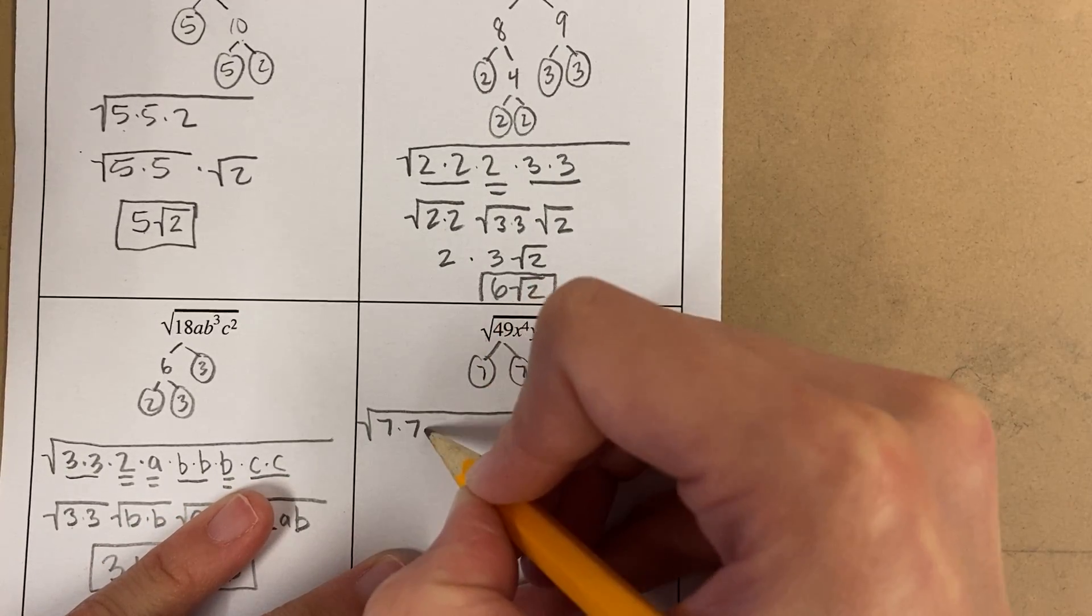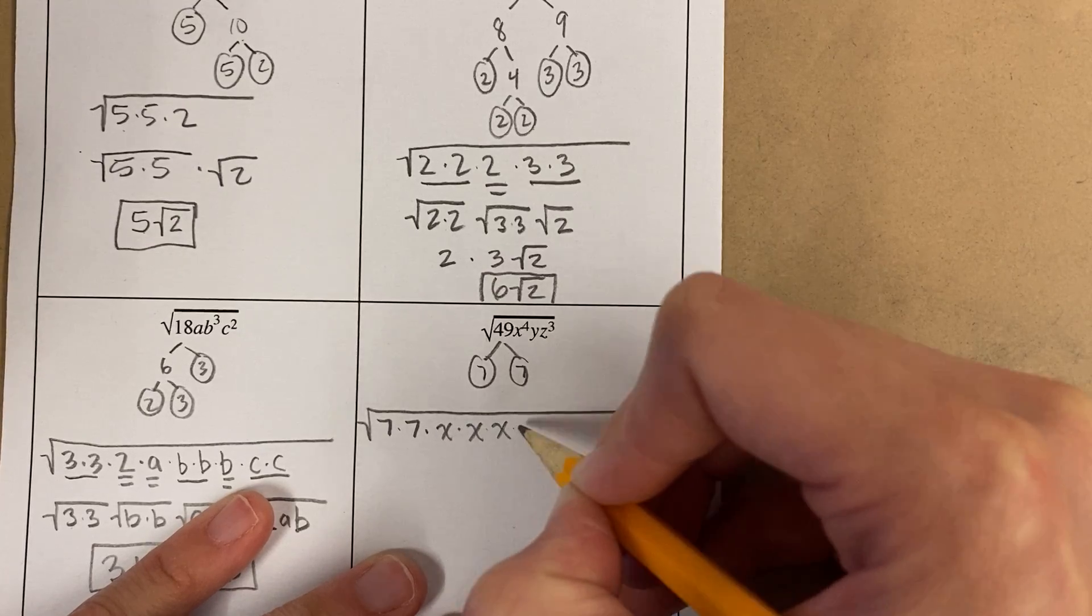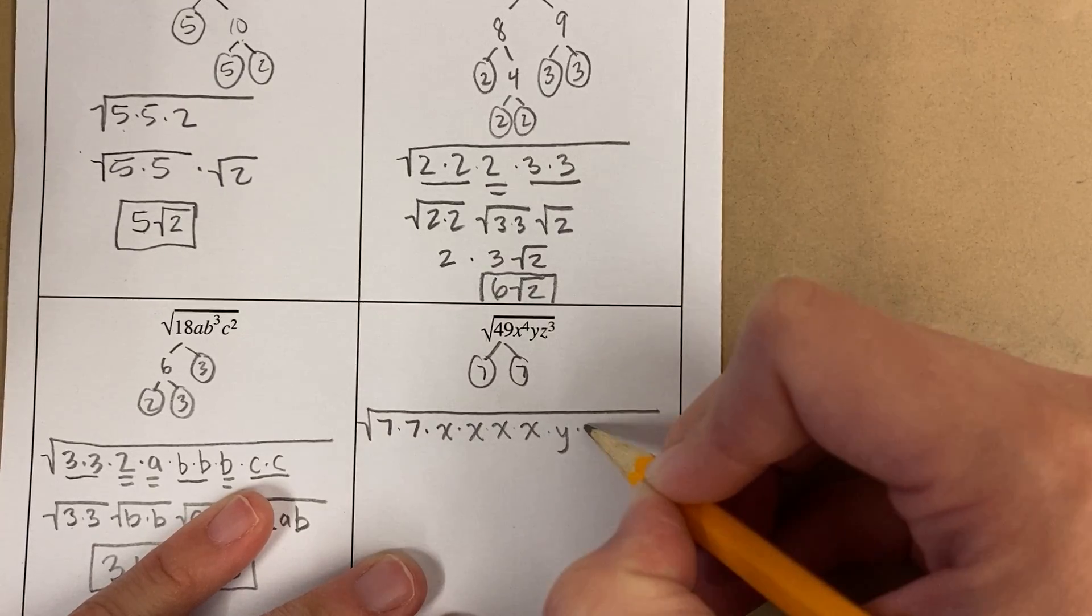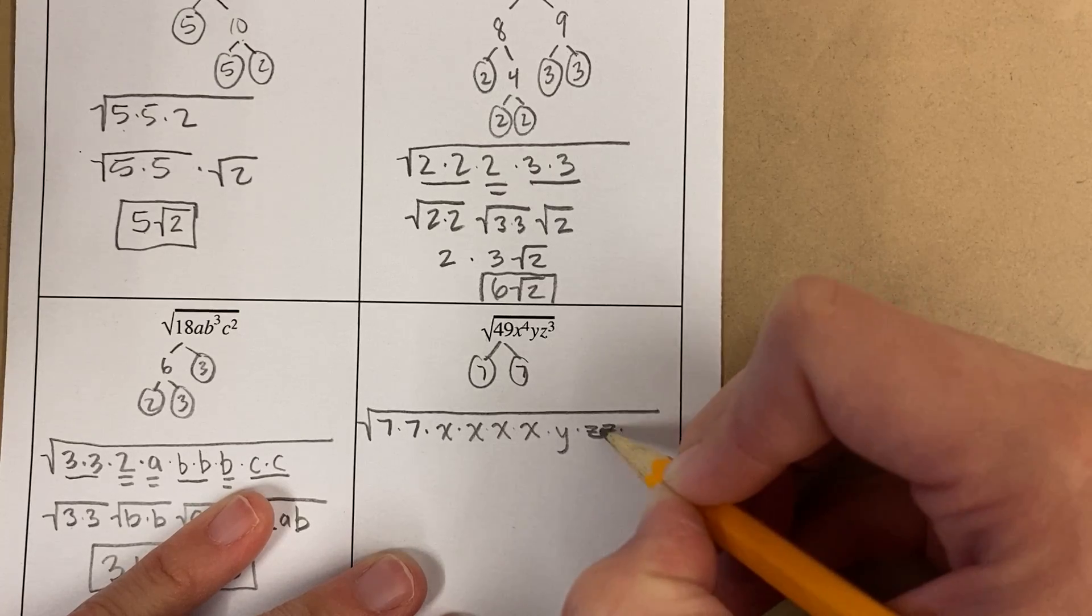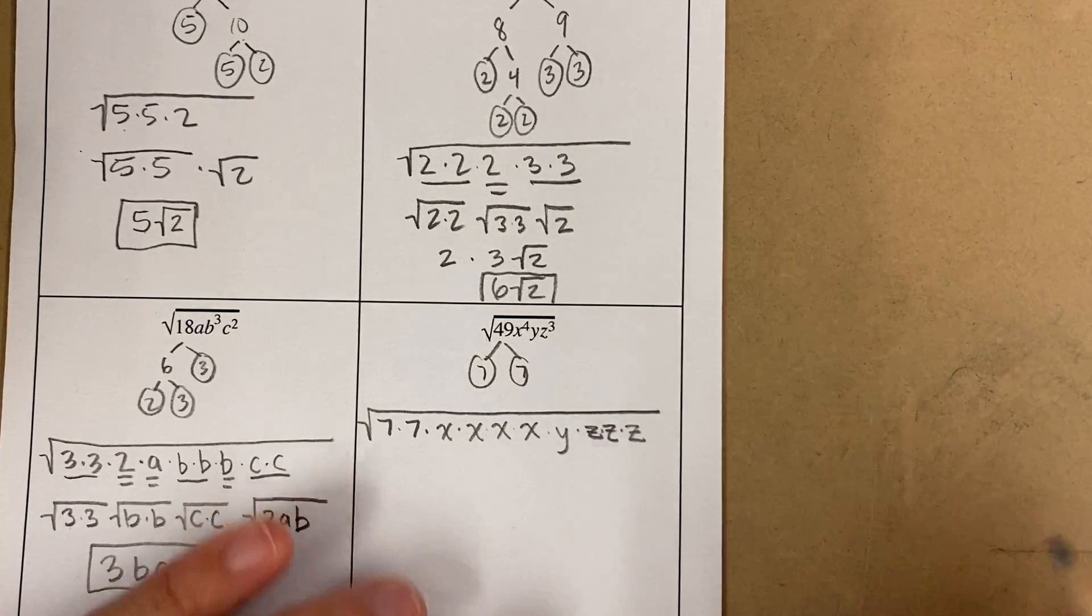So, 7 times 7. I have 4x's. I have 1y and 3z's. Please be careful with z's. They look like 2's, so just don't get mixed up.